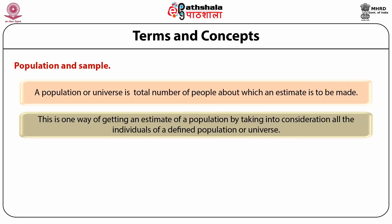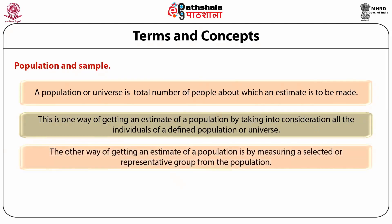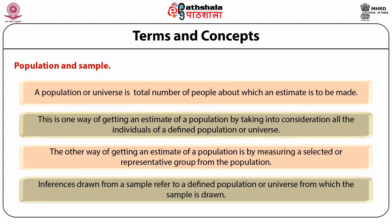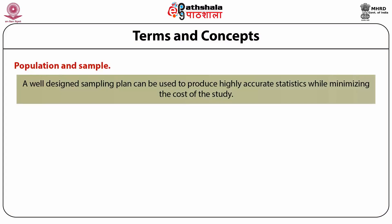In case of large populations, a lot of time, funds, and effort are required to cover the entire population for collecting data. The other way of getting an estimate is by measuring a selected or representative group from the population. This representative group is called a sample. Researchers adopt various sampling techniques depending upon the requirements of the study. Inferences drawn from a sample refer to the defined population or universe from which the sample is drawn. Larger the sample size and the more unbiased the sample is, the better the estimate it will provide for the population. A well-designed sampling plan can produce highly accurate statistics while minimizing the cost of the study. In statistical analysis, sample size and population size are represented by small n and capital N respectively.